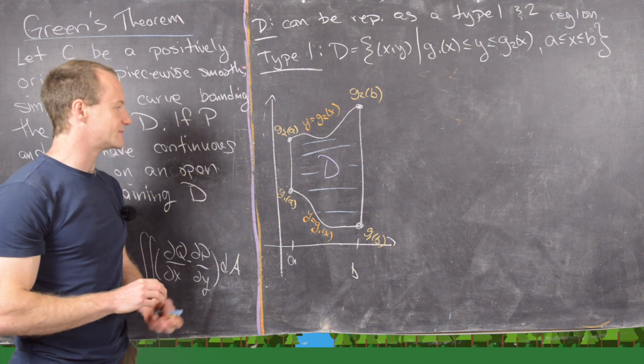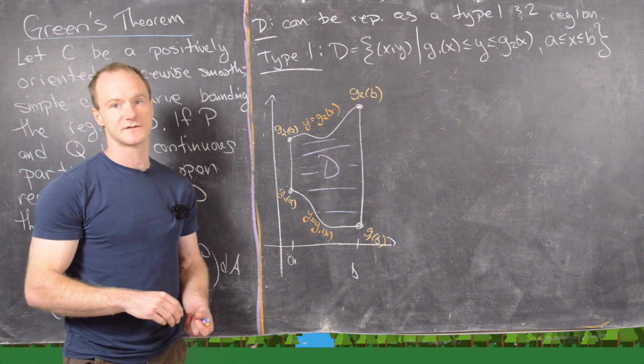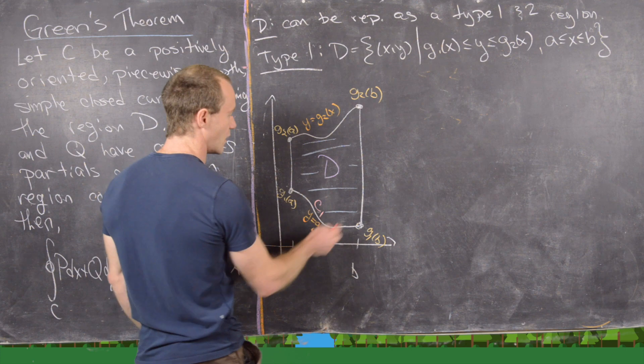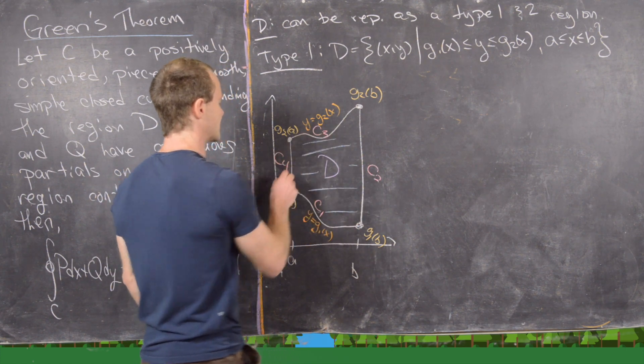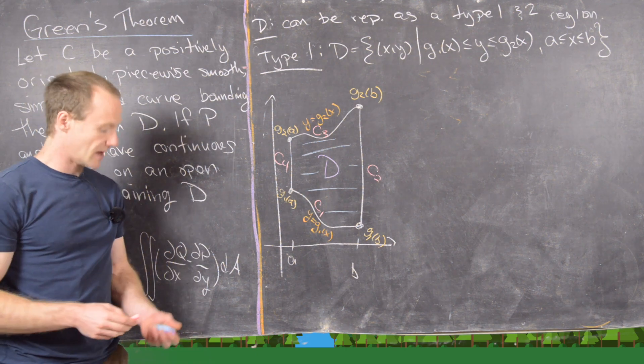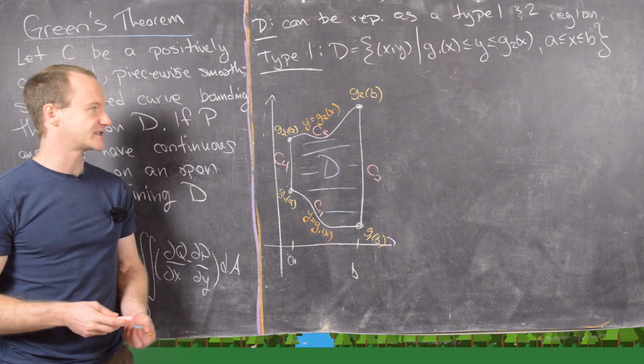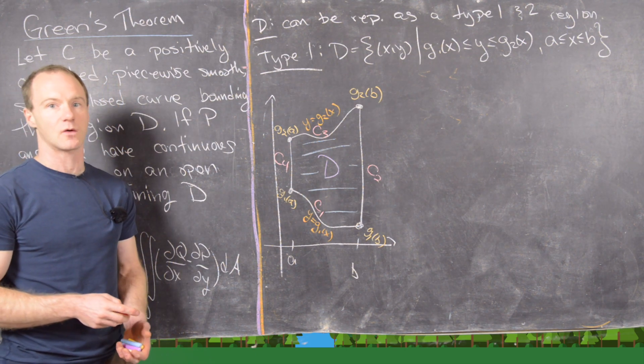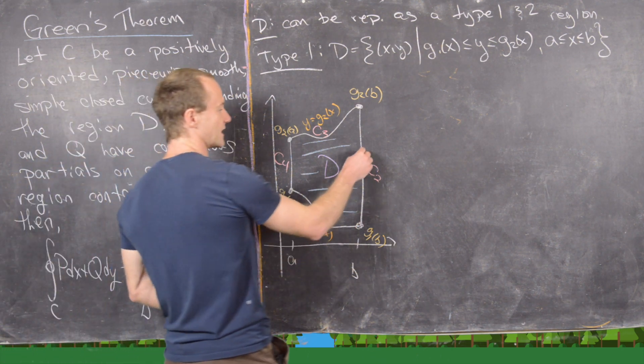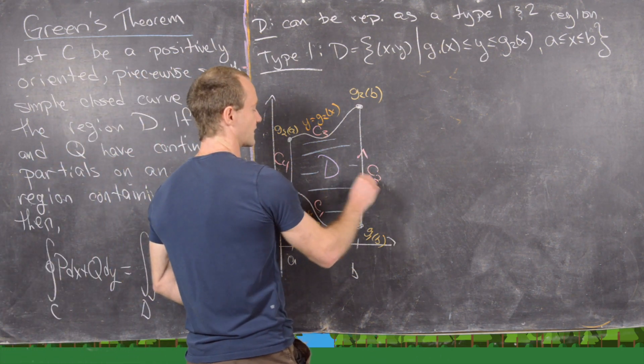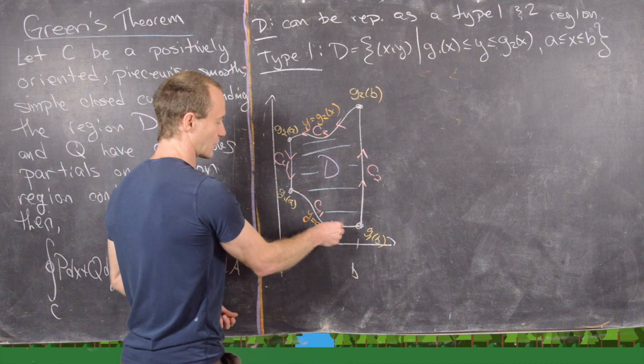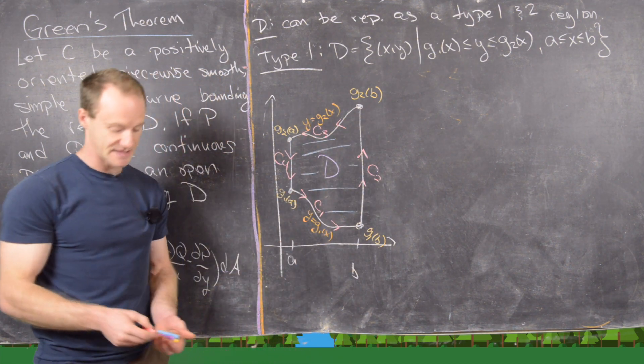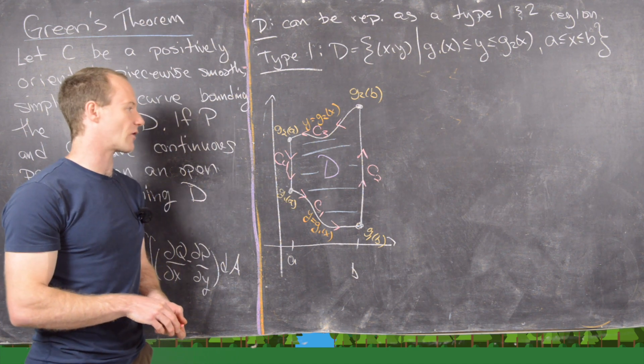And now let's give some names to these boundary curves. So we could call this one C1, we could call this one C2, we could call this one C3, and we could call this one C4. And then if we want to orient this so that it's positively oriented, then we should orient it so we're going up along this curve, left along this curve, down along this curve, and right along this curve. And notice that will put the region D to our left.